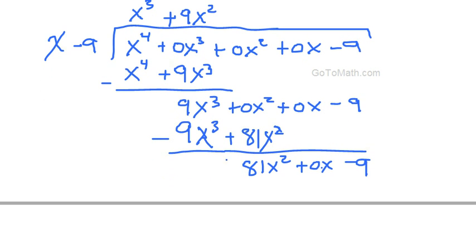All right, we got x goes into 81x squared, that's 81x. And then 81x times x is 81x squared. 81x times negative 9 is, let's see, let me guess here.